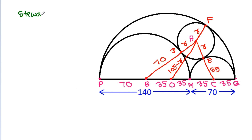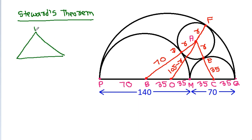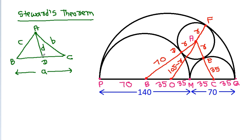According to Stewart's theorem, in any triangle ABC with cevian point D on BC: if BC is A, AC is B, AB is C, AD is D, BD is M, and CD is N, then B²M plus C²N equals A times (D² plus MN).